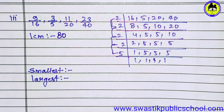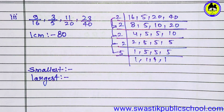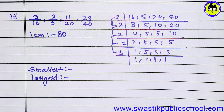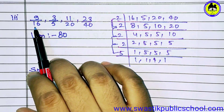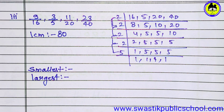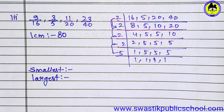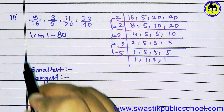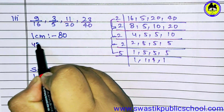The LCM is 80. Now for each fraction, for example the first fraction 9 upon 16 — we will divide 80 by 16, which gives us 5. We multiply both numerator and denominator by 5: 9 × 5 = 45, and 16 × 5 = 80. So 9 upon 16 becomes 45 upon 80.